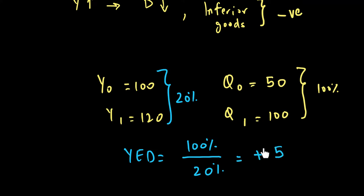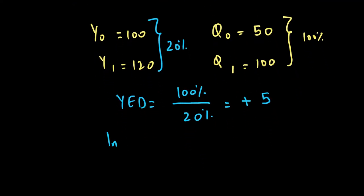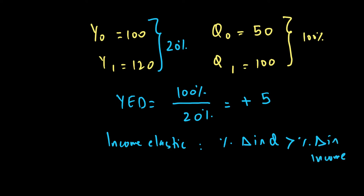A positive sign means the relationship between quantity demanded and income is positive, so the good must be normal. The value of 5 tells us it is income elastic. Why? Because the percentage change in quantity is greater than the percentage change in income, meaning this good has a very strong and sensitive relationship with changes in income.